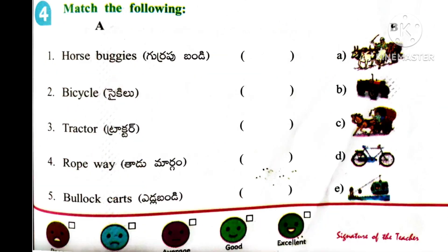4th activity: Here given some pictures and their names. You have to match them correctly. 1st one: Horse Boogies — Answer: Option C. 2nd one: Bicycle — Answer: Option D. 3rd one: Tractor — Option B. 4th one: Ropeway — Option E. 5th one: Bullock Cards — Option A.